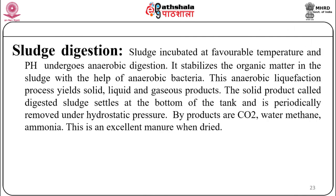Sludge digestion involves sludge incubated at a favorable temperature and pH undergoing anaerobic digestion. It stabilizes the organic matter in the sludge with the help of anaerobic bacteria. This anaerobic liquefaction process yields solid, liquid, and gaseous products. The solid product, called digestive sludge, settles at the bottom of the tank and is periodically removed under hydrostatic pressure. By-products include CO2, water, methane, and ammonia. The dried digestive sludge is an excellent manure that can be used for agricultural purposes.